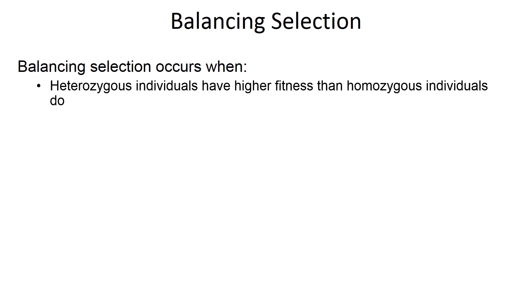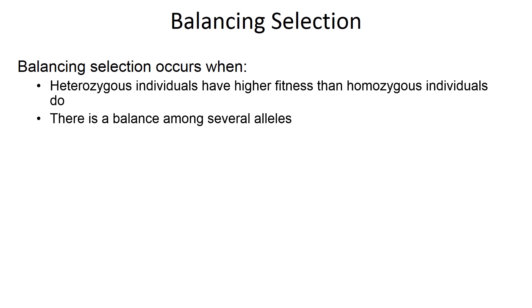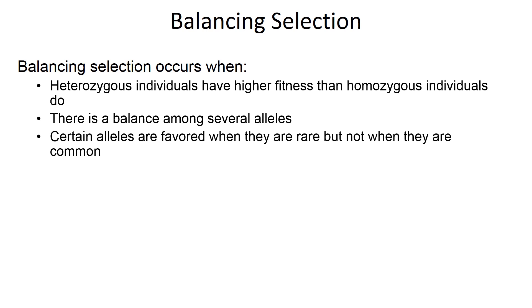Another type of selection is called balancing selection. This occurs when heterozygous individuals — those with both versions of the alleles — have higher fitness than individuals that are homozygous. This means there's a balance among several alleles. A population can easily have two, three, five, or multiple alleles for a single gene, though an individual can only have two alleles at most. Certain alleles are favored when they are rare but not when they're common.